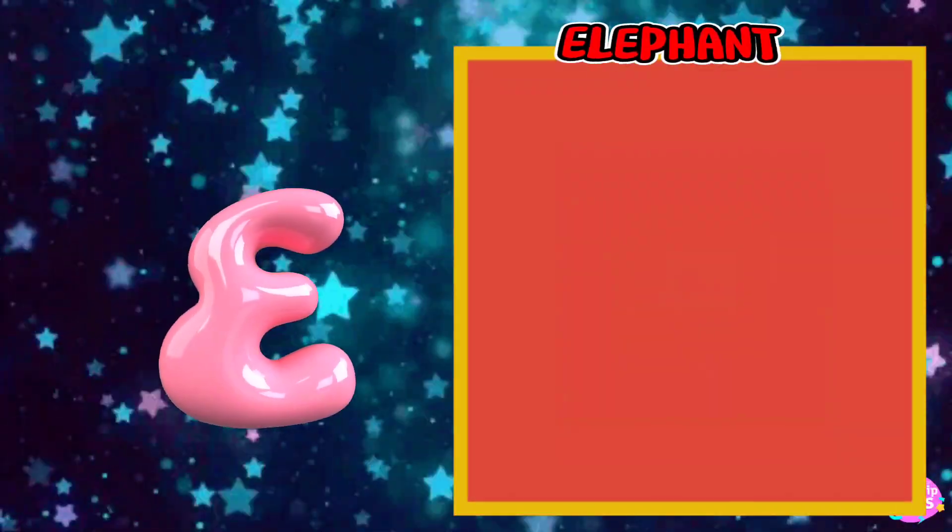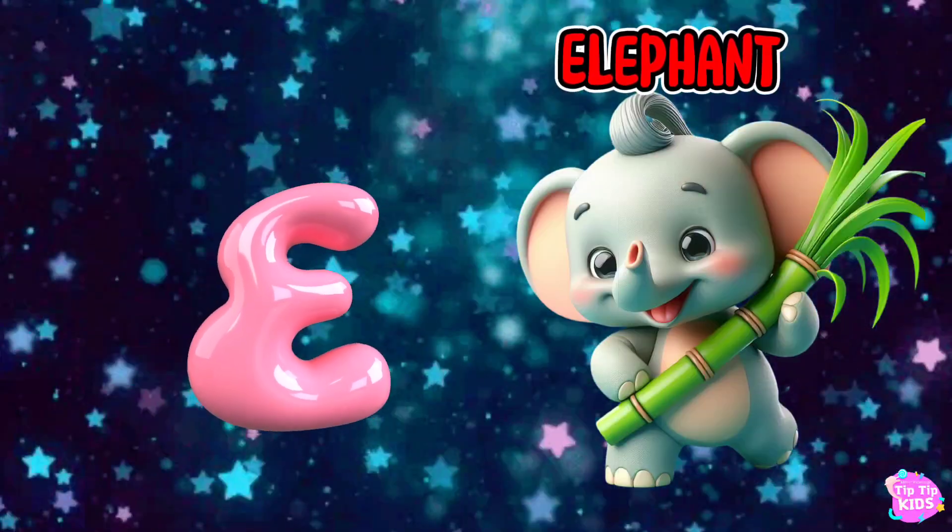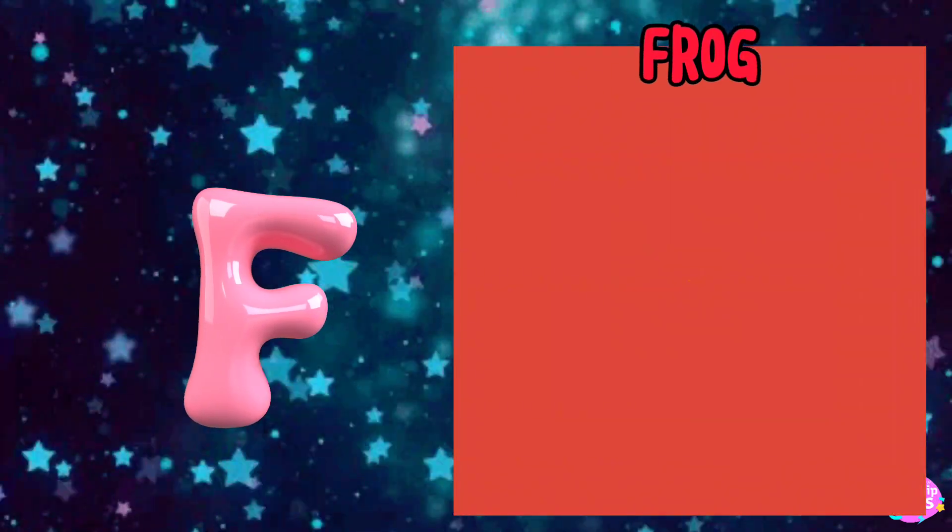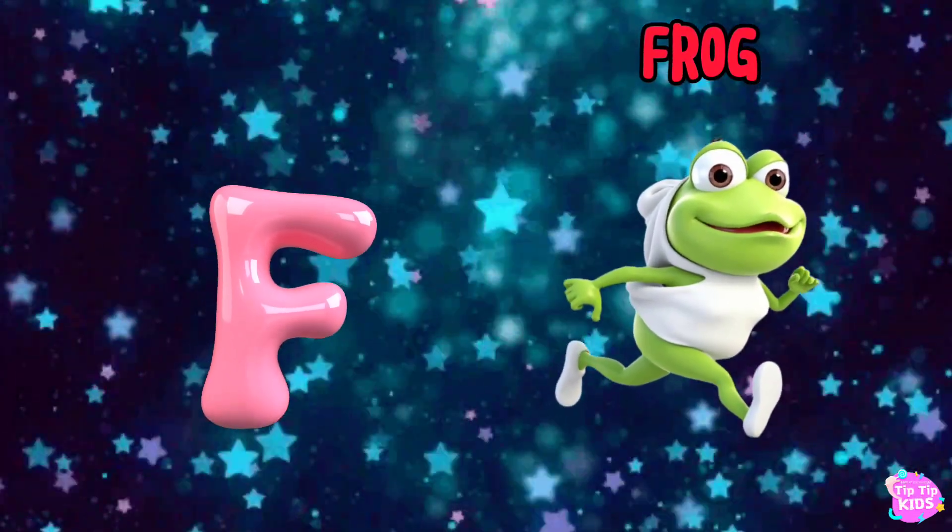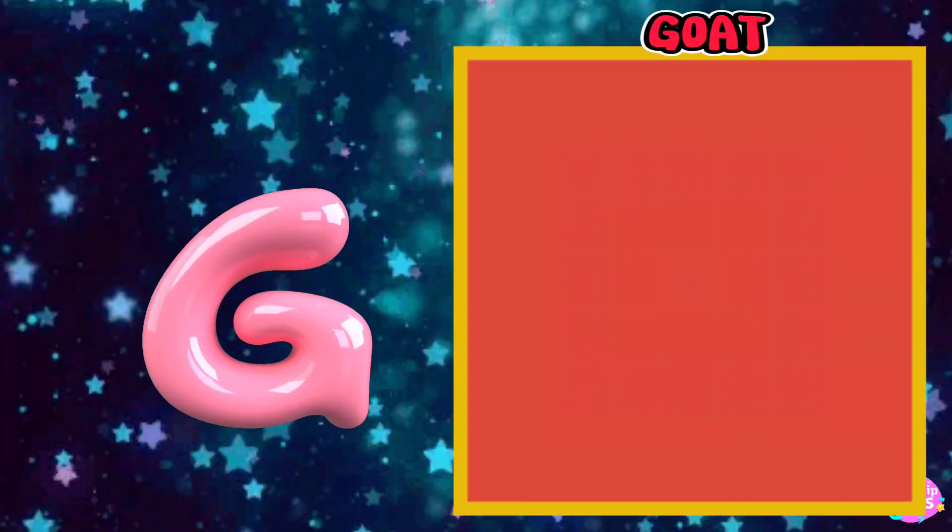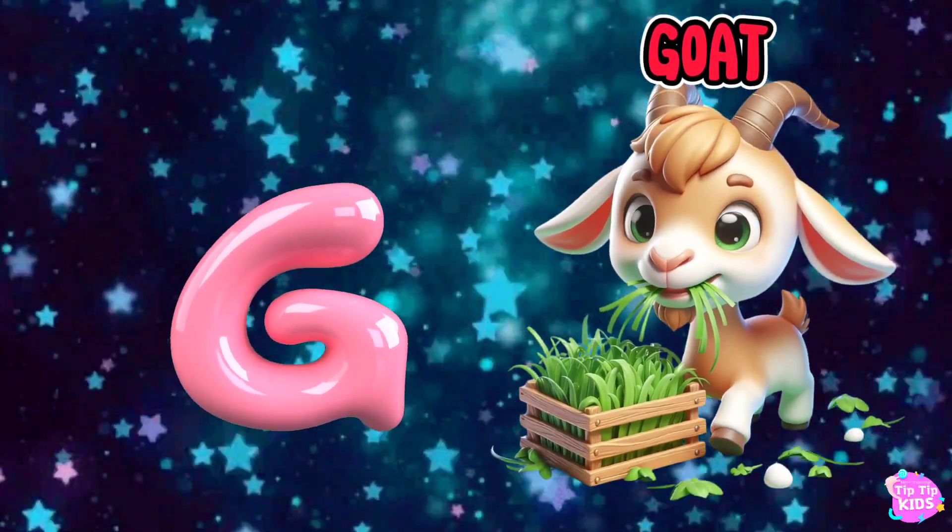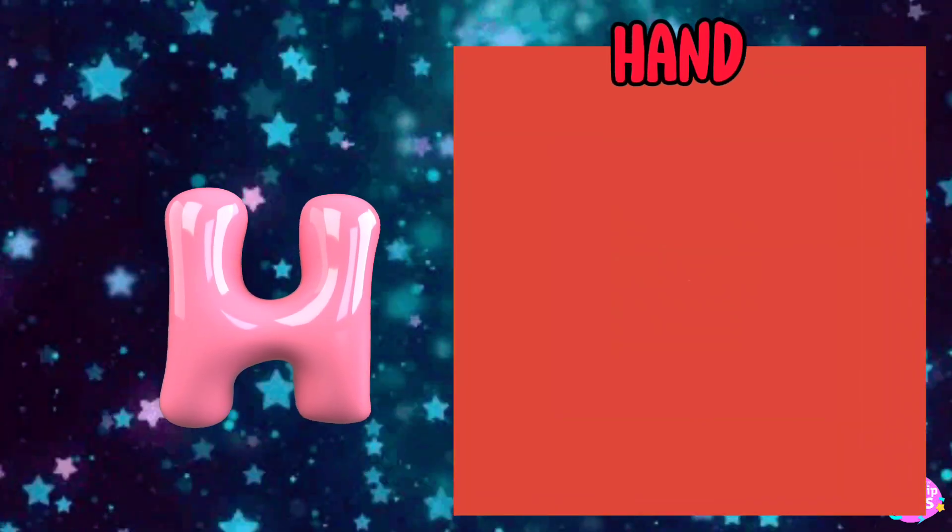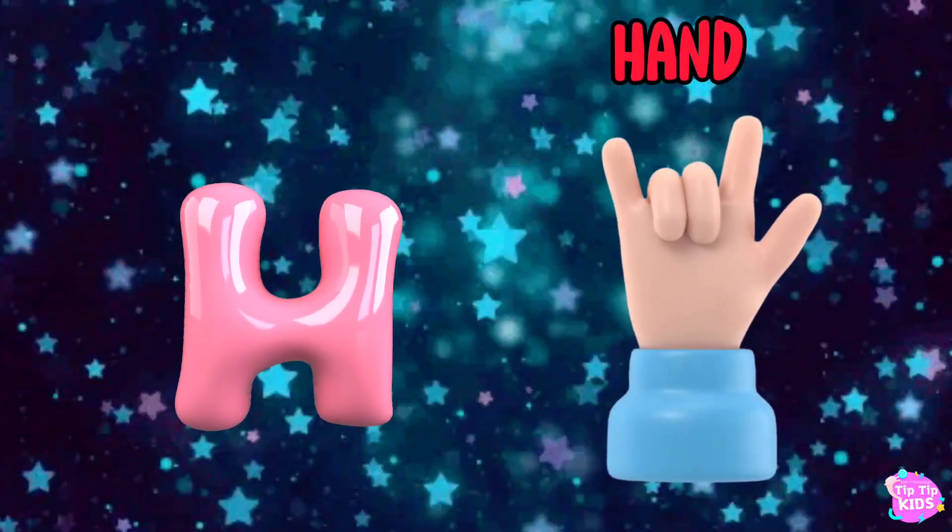E is for Elephant, E-E-Elephant. F is for Frog, F-F-Frog. G is for Goat, G-G-Goat. H is for Hat, H-H-Hat.